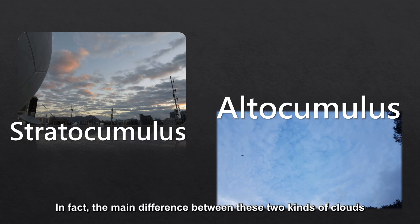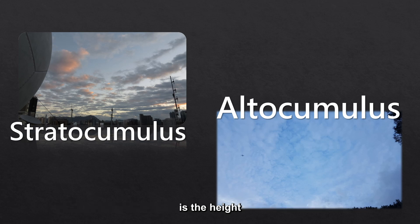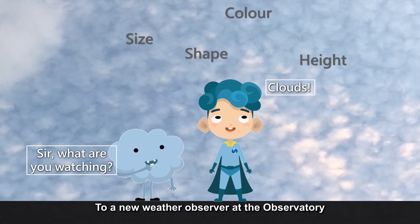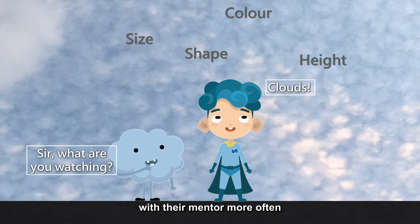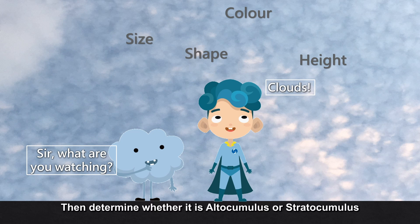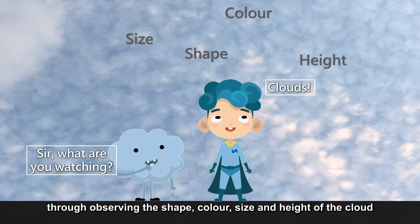In fact, the main difference between these two kinds of clouds is the height. To a new weather observer at the observatory, I'd suggest making weather observations with their mentor more often to gain more experience. Then determine whether it is Altocumulus or Stratocumulus through observing the shape, color, size and height of the cloud.